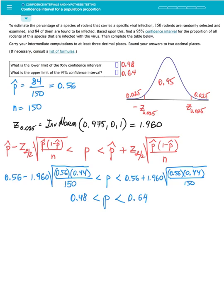In this lesson we will learn how to construct confidence intervals for a population proportion. To estimate the percentage of a species of rodent that carries a specific viral infection, 150 rodents are randomly selected and examined.